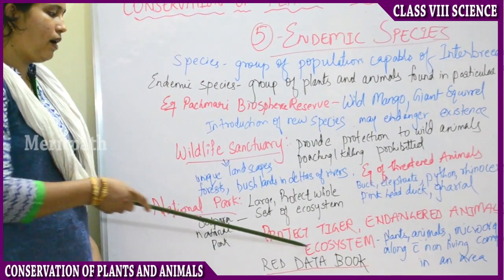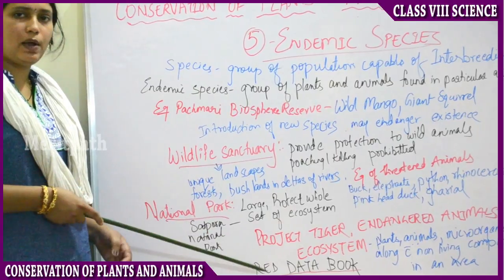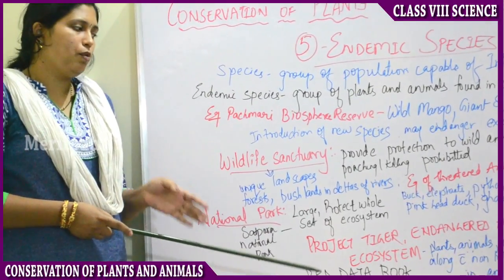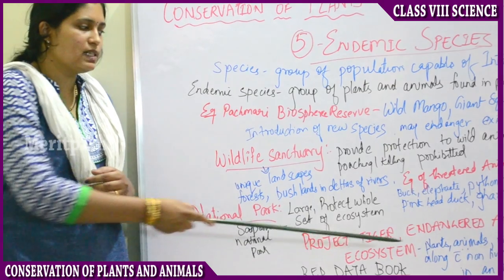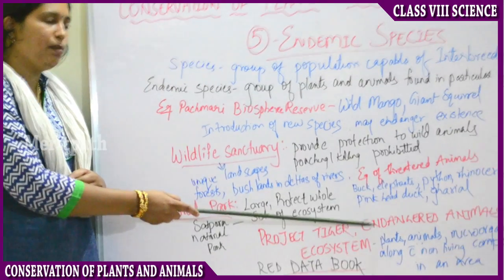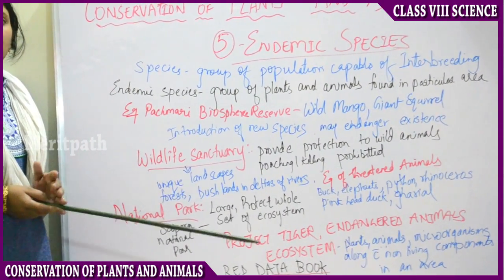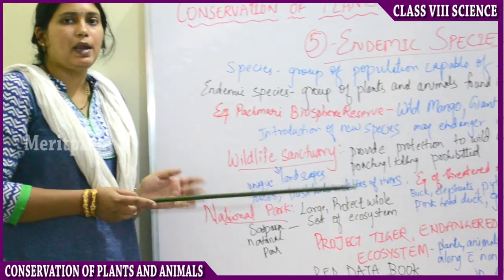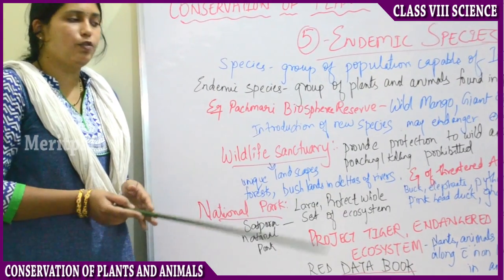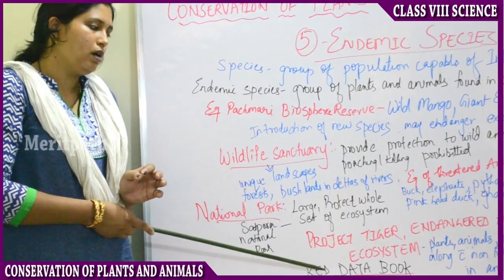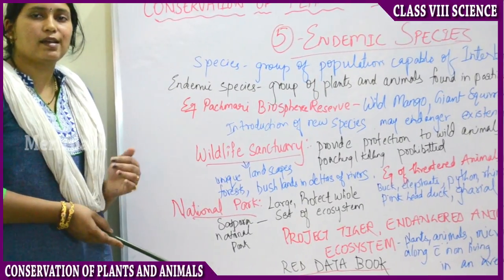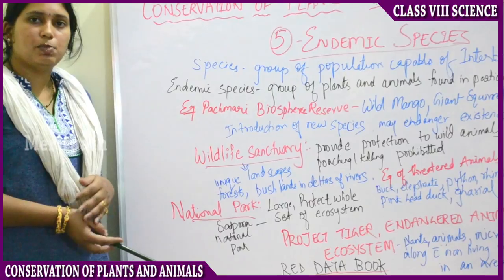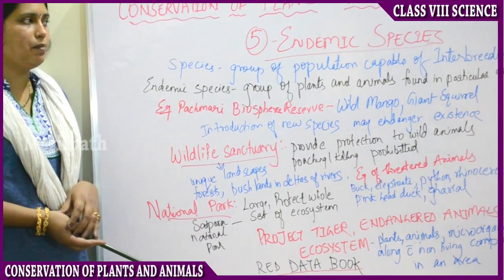Then there is the Red Data Book, maintained by the government. The Red Data Book maintains a list of these endangered and threatened species. There are separate books for plants and separate books for animals. Red Data Book keeps a record of all endangered and threatened species, both plants and animals.